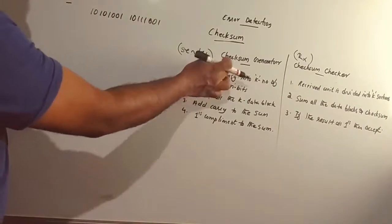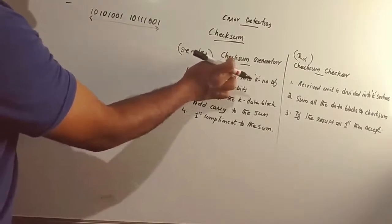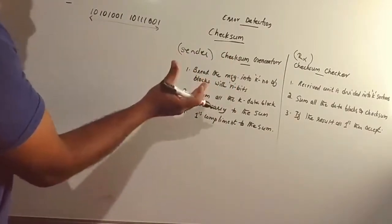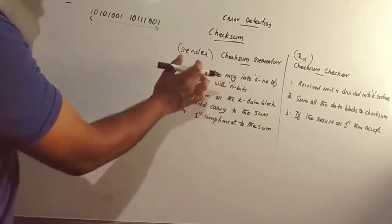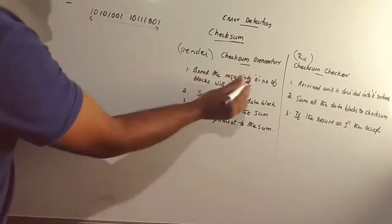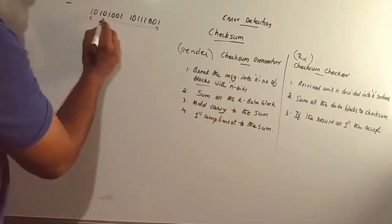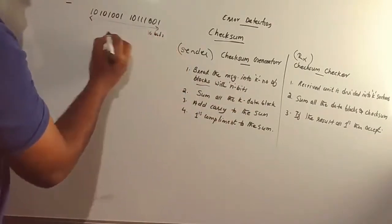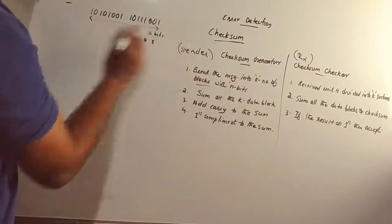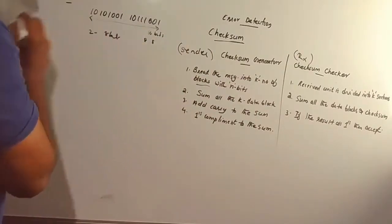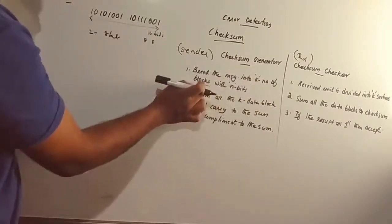The first step is to check the original message. The original message will go into the checksum generator, and the redundant bits will be calculated. We break the message into K number of blocks, each with N bits.